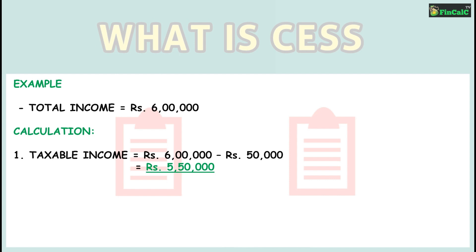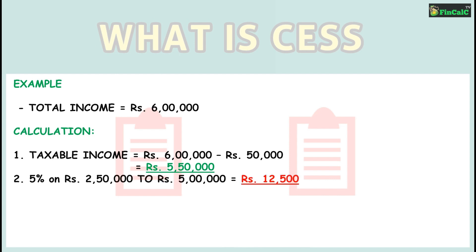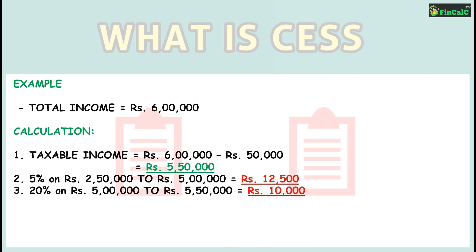Based on the tax slab rates for financial year 2019-20, 5% tax will be applicable on income between rupees 2 lakhs 50,000 to rupees 5 lakhs, which is equal to rupees 12,500. 20% tax will be applicable on income between rupees 5 lakhs to rupees 5 lakhs 50,000, which is equal to rupees 10,000.